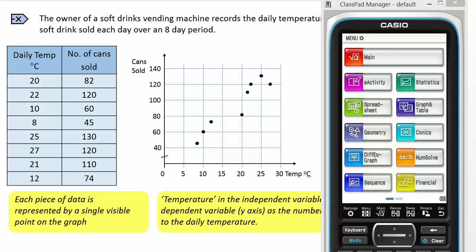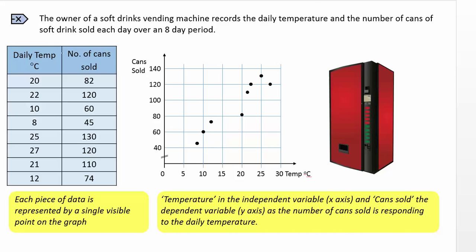I would now like to show you how you can use your graphics calculator in order to find the equation of the line of best fit. In this instance, we're looking at the daily temperature as the independent or x variable, and the number of cans sold as the y variable.